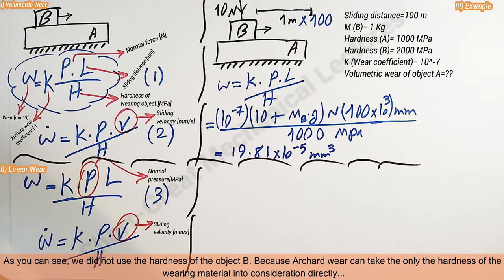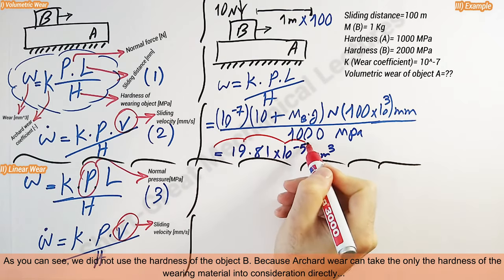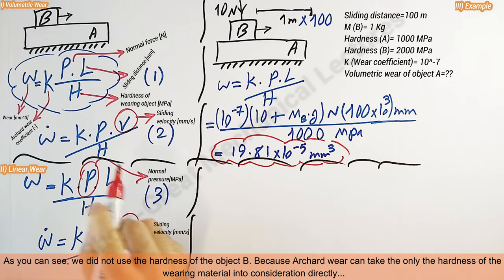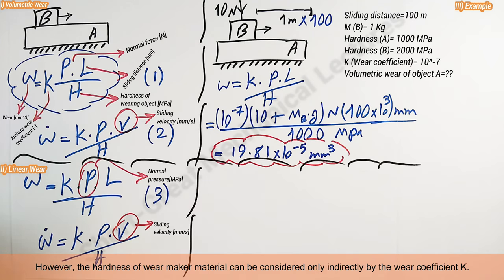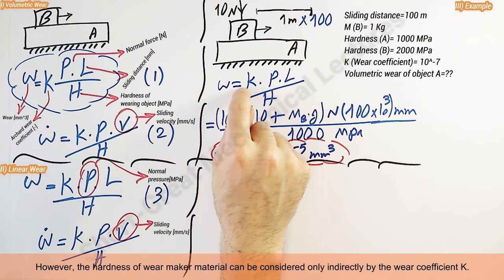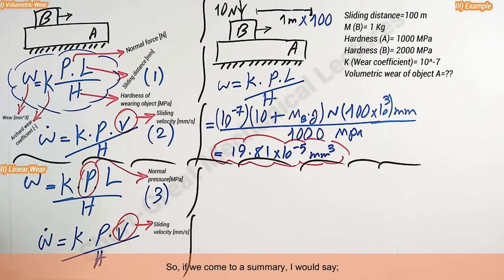As you can see, we did not use the hardness of the object B, because Archard wear can take only the hardness of the wearing material into consideration directly and not the hardness of the wear maker material. And this is a big drawback of the Archard model. However, the hardness of the wear maker material can be considered only indirectly by the wear coefficient K.